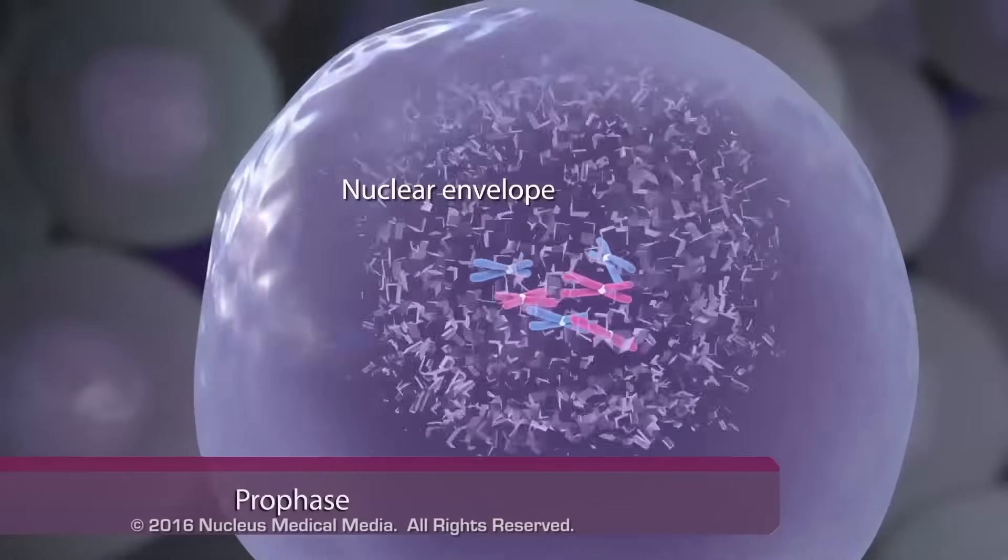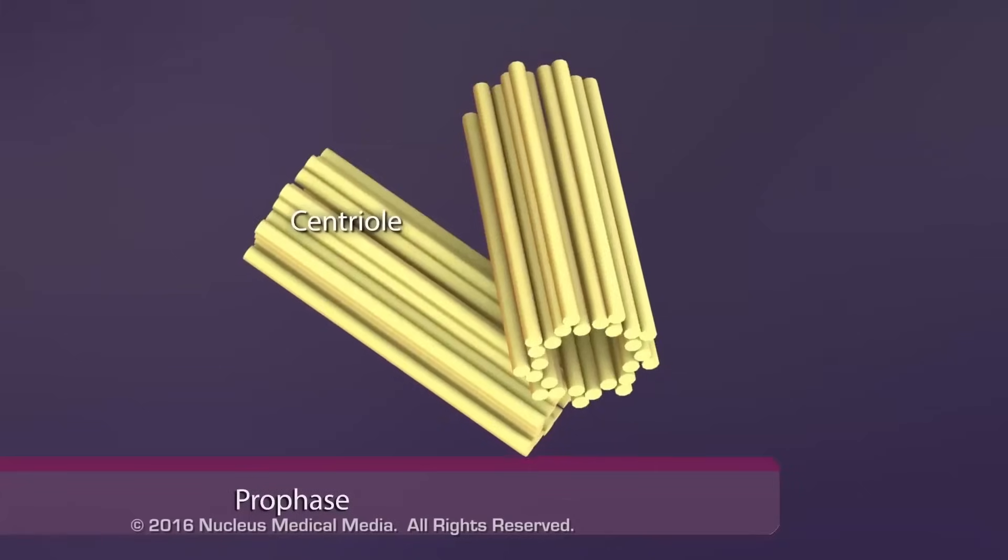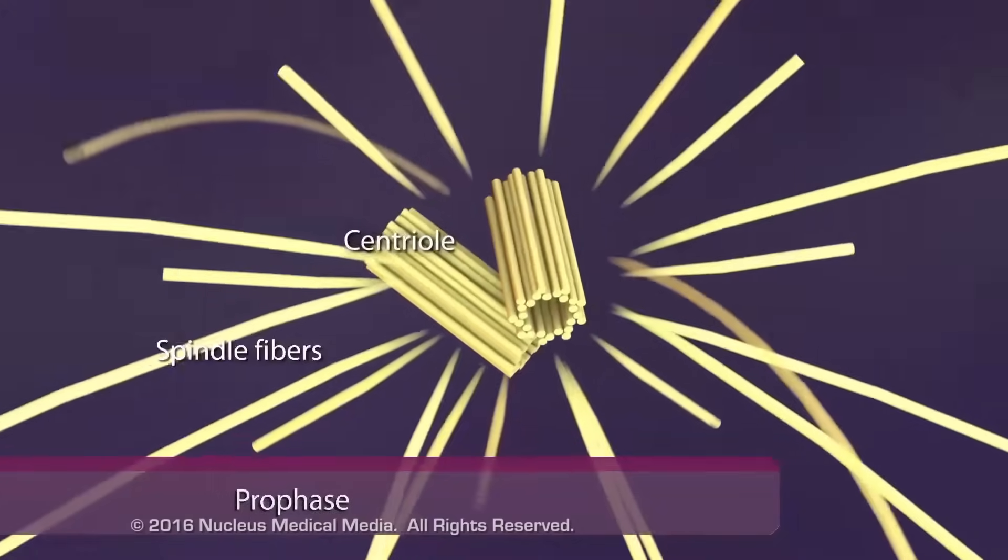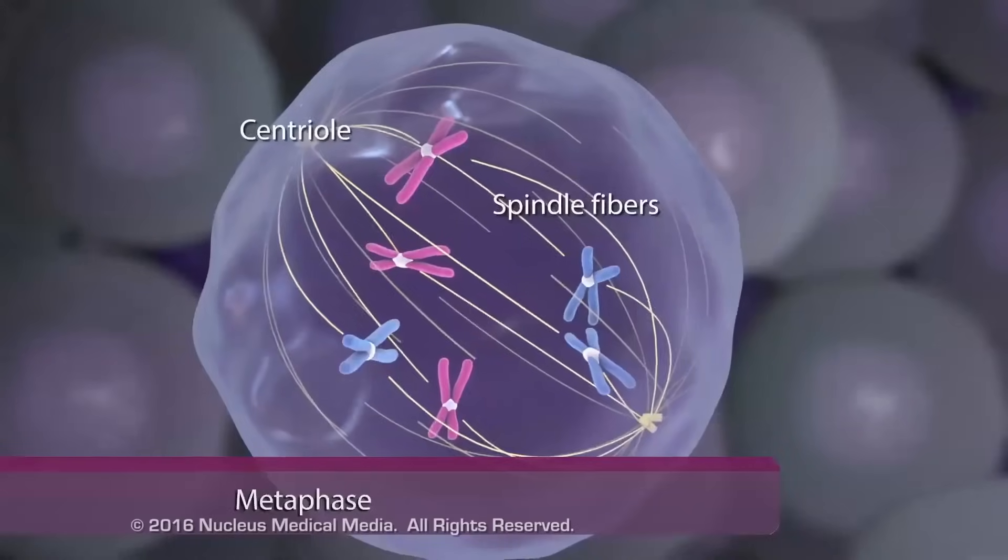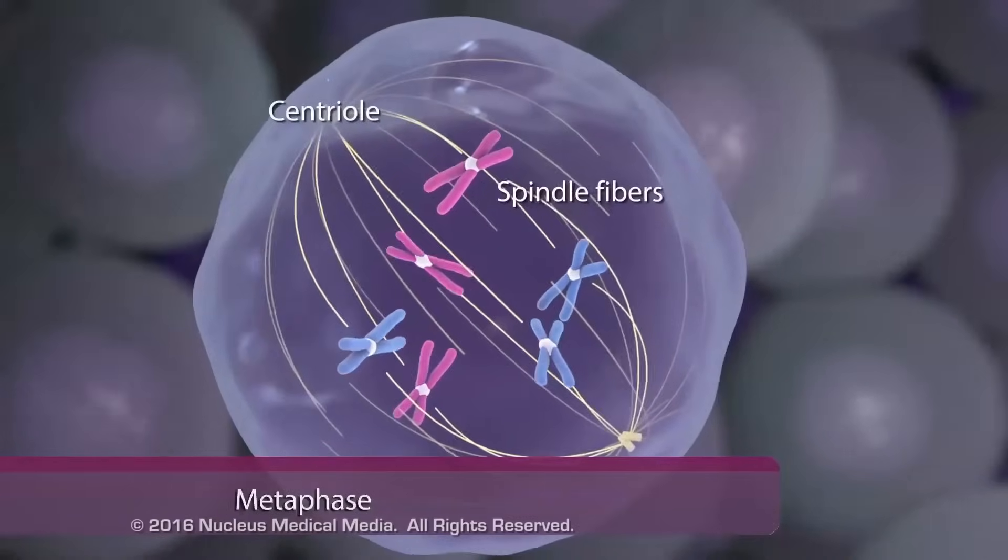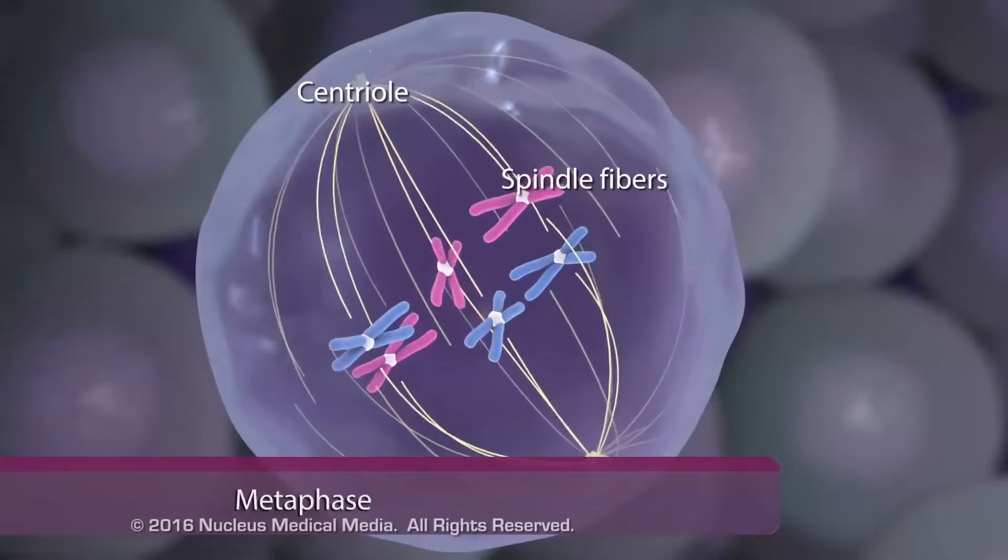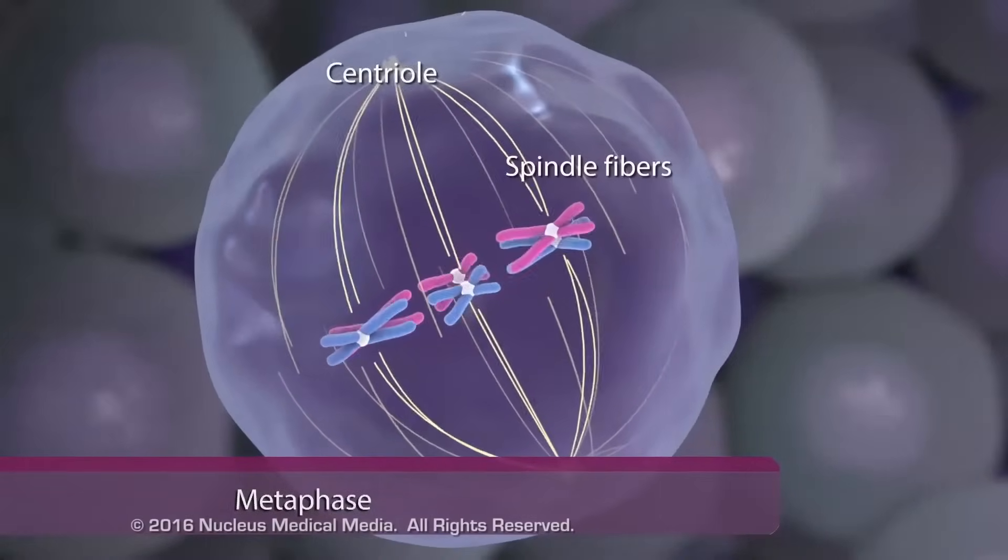The nuclear envelope dissolves, and spindle fibers begin to grow from the cell's centrioles. During metaphase, the spindle fibers pull the chromosomes into alignment in the center of the cell.